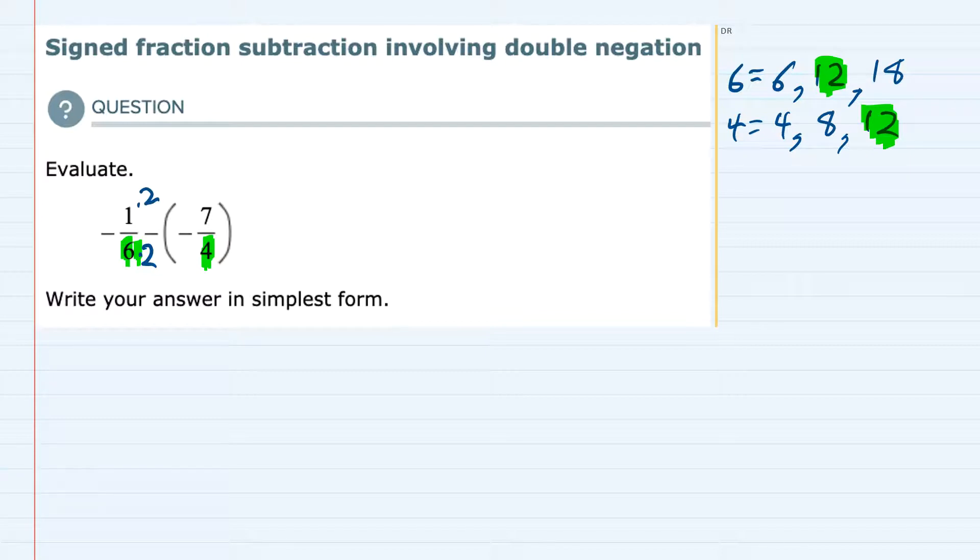For the second fraction, I would need to multiply the 4 in the denominator by 3. And in order to do that, I would also need to multiply the numerator by 3.